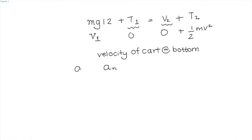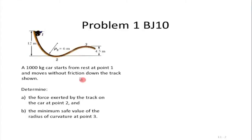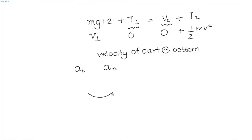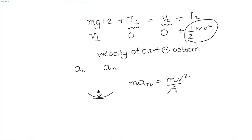There are two components of acceleration: the tangential acceleration and the normal acceleration. The tangential acceleration we cannot immediately figure out from the given information. But if the track is frictionless, at the bottom there are two possible forces — one is the friction force and the other is the normal reaction acting on the track. The friction force is 0 since we neglect friction, and the normal force equals mass times the acceleration in the normal direction, which equals m*v squared divided by rho.